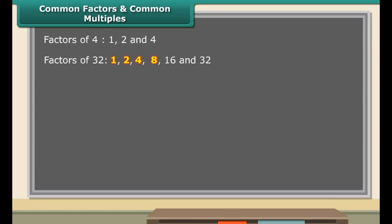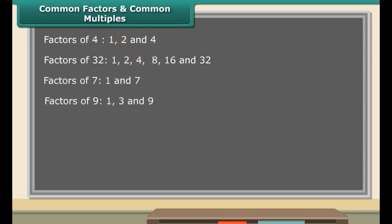Let us take some numbers in pairs and observe their factors. Look at the numbers 4 and 32. The factors of 4 are 1, 2, and 4. The factors of 32 are 1, 2, 4, 8, 16, and 32. The factors 1, 2, and 4 are common to both 4 and 32. Hence, they are called common factors.